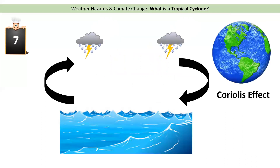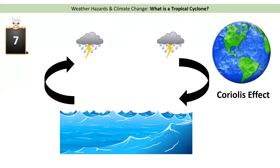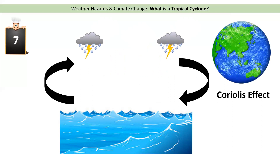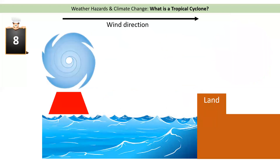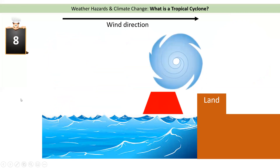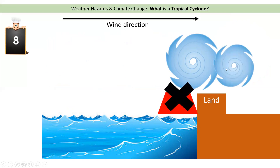Stage seven: the storm starts to spin because of the Coriolis effect. Because the earth is spinning, the storm also begins to spin and rotate. Stage eight: the tropical cyclone moves toward land, and as it does it loses the heat from the ocean. As it loses that heat energy it gets smaller and smaller as it continues across the land, because it has lost its source of energy — the heat from the ocean.